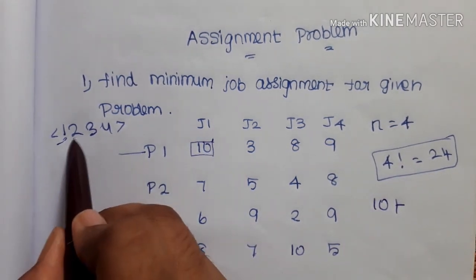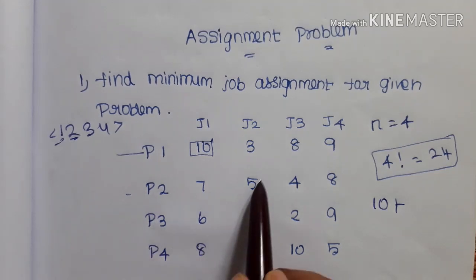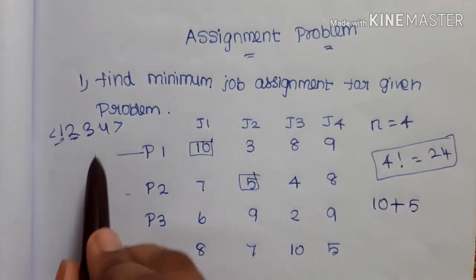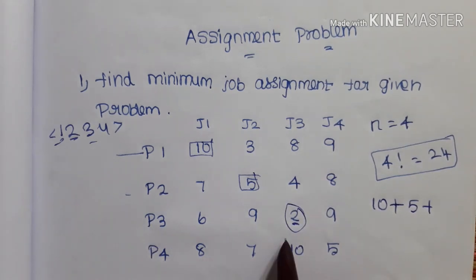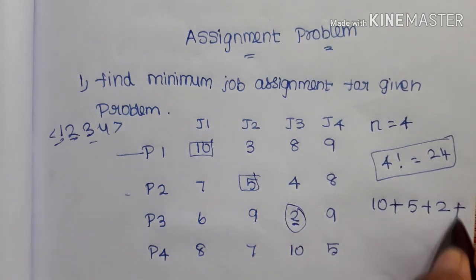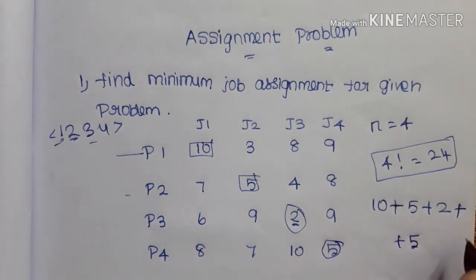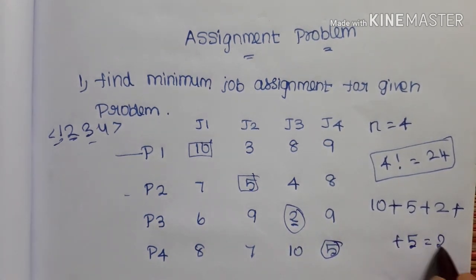Second is 2 of D. Third is 3 of D. The fourth value is 5. So now we calculate 20.